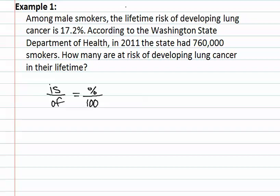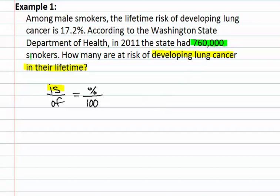We start by identifying what is interesting. The interesting fact is those developing lung cancer, and that is what we are looking for — the 'is' is those developing lung cancer. The 'of' is the total, and in that case it would be the 760,000 smokers. The percent is usually the easiest to find because it has a percent symbol. We can now set up our proportion.